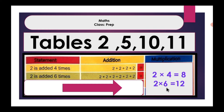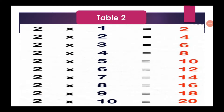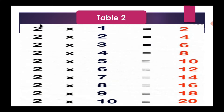Let's learn table 2. 2 ones are 2, 2 twos are 4, 2 threes are 6, 2 fours are 8, 2 fives are 10, 2 sixes are 12, 2 sevens are 14, 2 eights are 16, 2 nines are 18, 2 tens are 20.